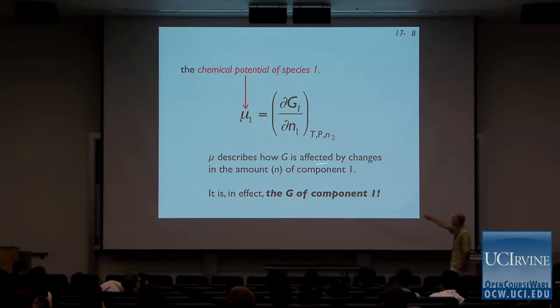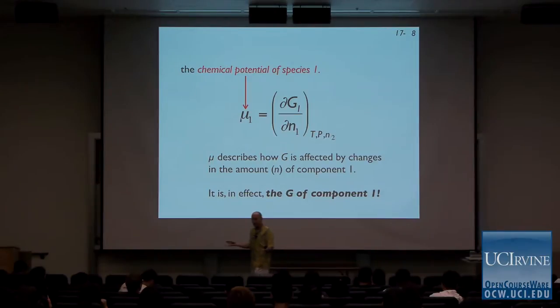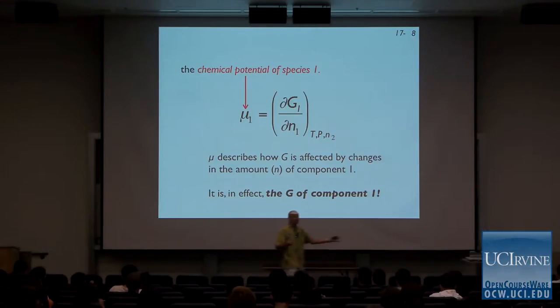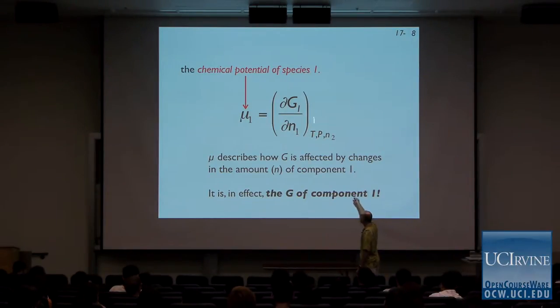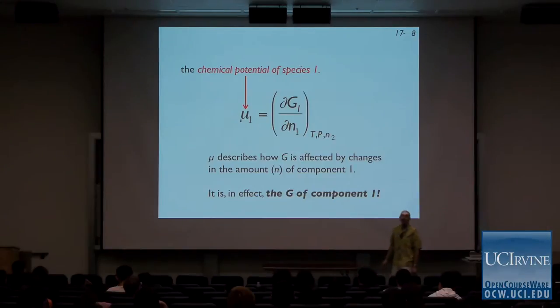Mu describes how G is affected by changes in the amount of one component. It is in effect the Gibbs energy of a particular component — the Gibbs energy of a single component. Why didn't they just call it the Gibbs energy of component one? I don't know — it would have been a lot easier, because that's what it is. It's just the Gibbs energy of component one: hydrogen or deuterium.